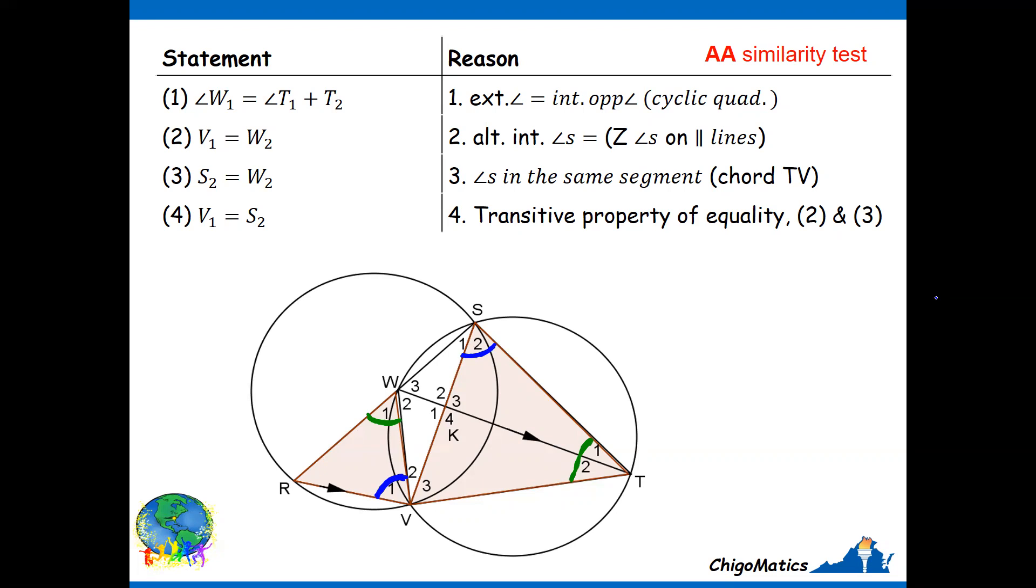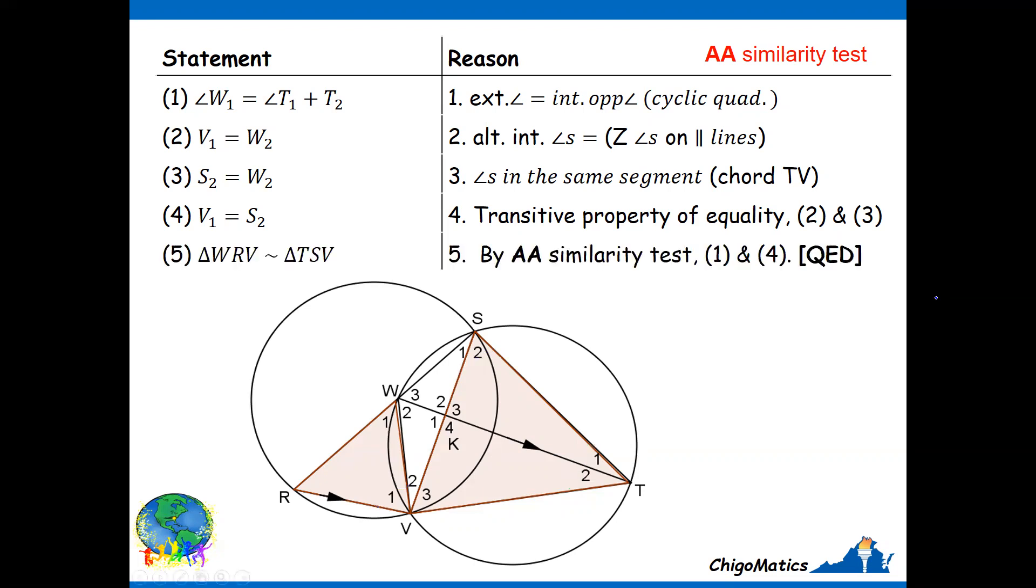From here, we can now safely conclude that the two triangles are similar by angle-angle test. That is all what it takes to show that given triangles are similar. We are through with our demonstration, and it is very short as you can see.